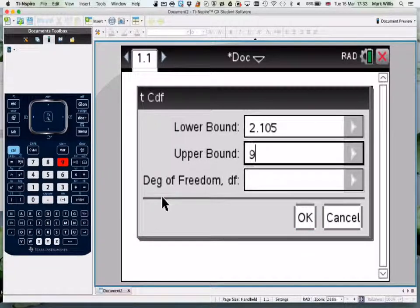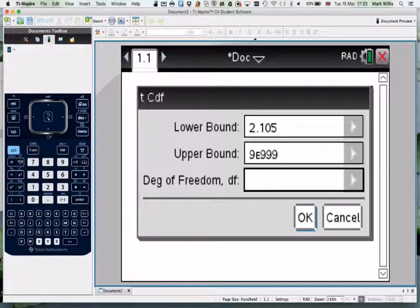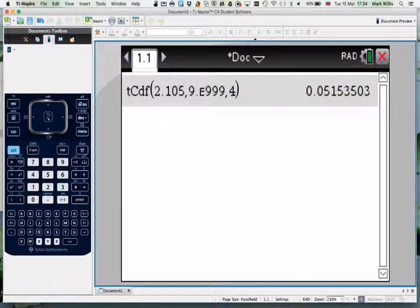Put the lower bound at 2.105 and the upper bound at infinity (9, Control, E to the 999). The degrees of freedom were 4 in this case. Press OK and you get a value of 0.0515.